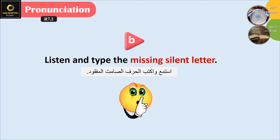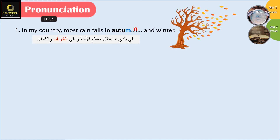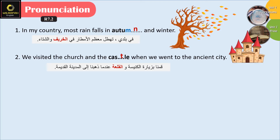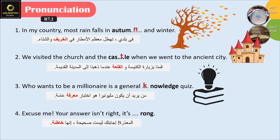Question B: Listen and type the missing silent letter. One: In my country, most rain falls in autumn and winter. Two: We visited the church and the castle when we went to the ancient city. Three: Who Wants to Be a Millionaire is a general knowledge quiz. Four: Excuse me, your answer isn't right, it's wrong.